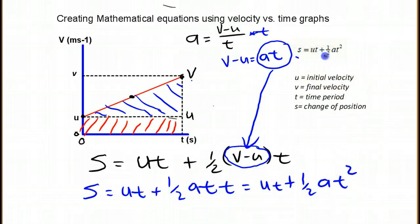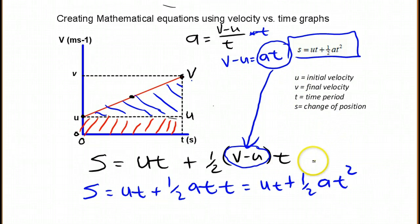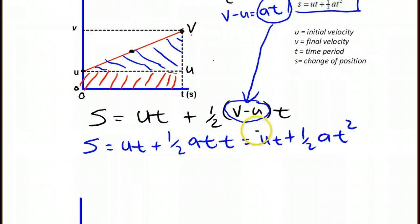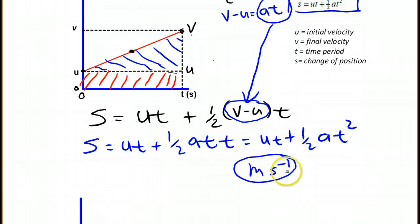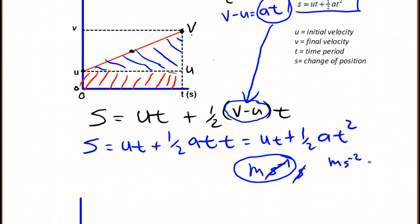That is exactly what we have up here, and is in the data booklet. Now let's check units to make sure this works out. U is in units of meters per second, T is in units of seconds, so U times T gives meters. Here, acceleration is meters per second squared, multiplied by seconds squared — those cancel — giving meters. We're adding meters to meters, giving us S in meters. So that works.